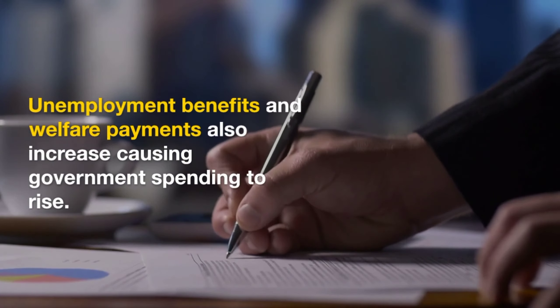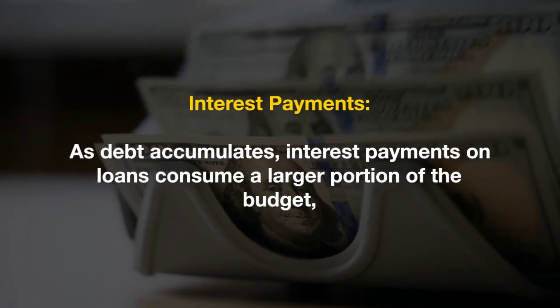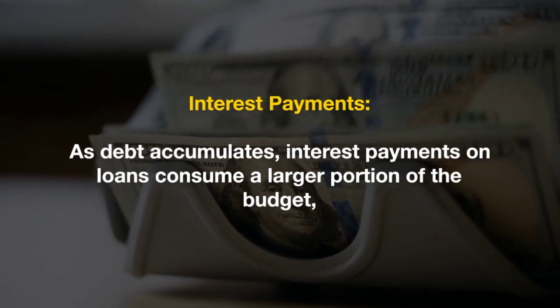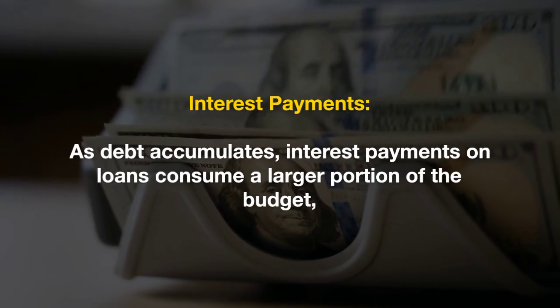Primary deficit. This is the fiscal deficit minus the interest payments on the government's previous borrowings. It gives a clearer picture of the government's ability to manage its finances.